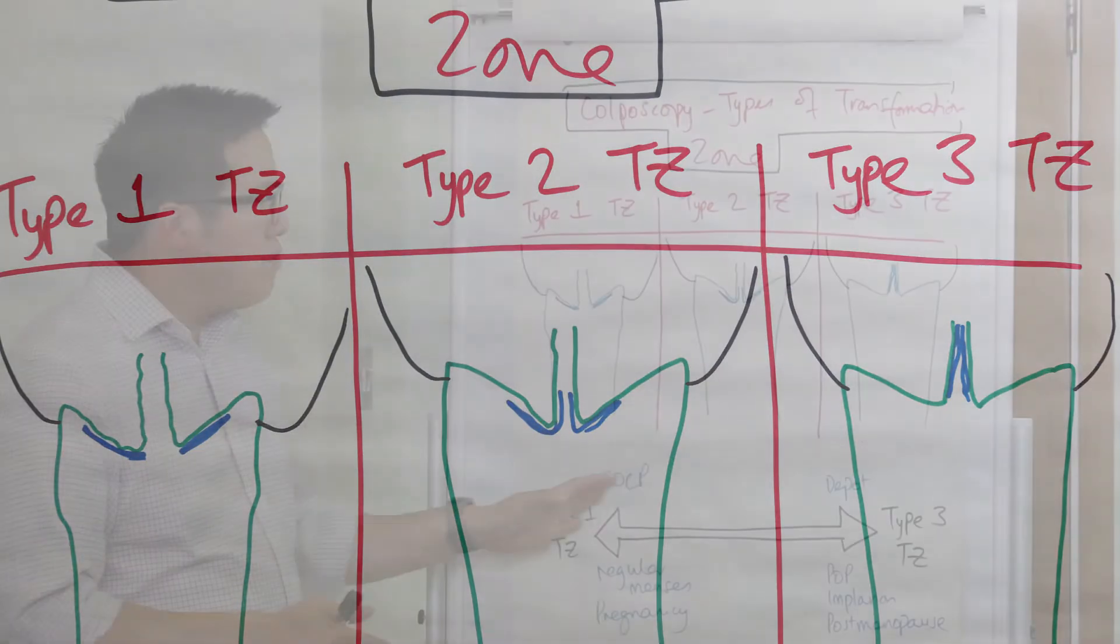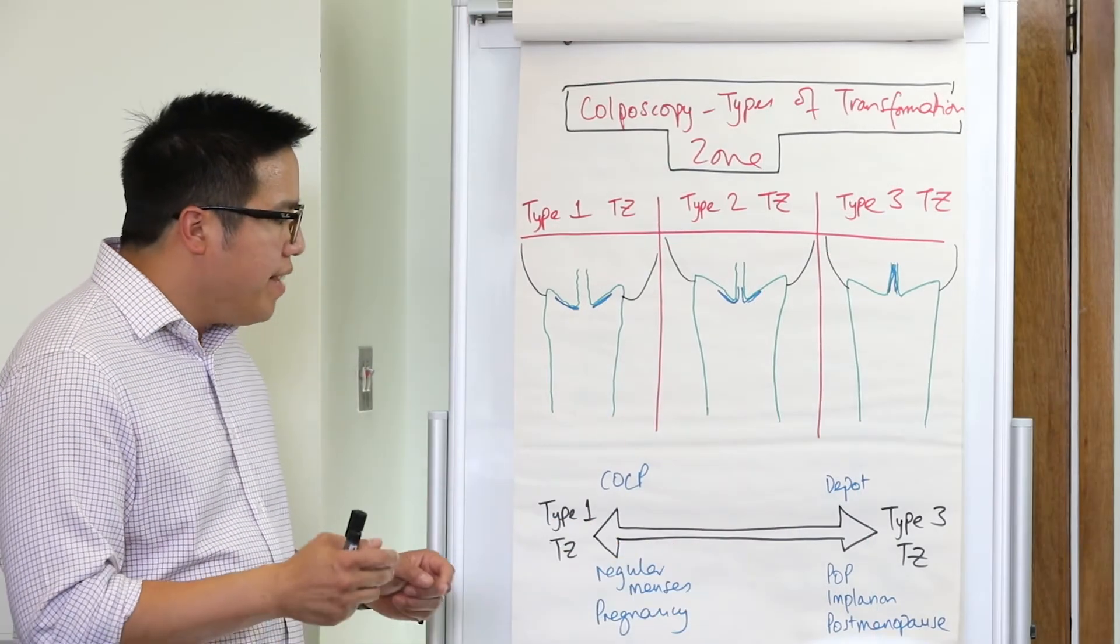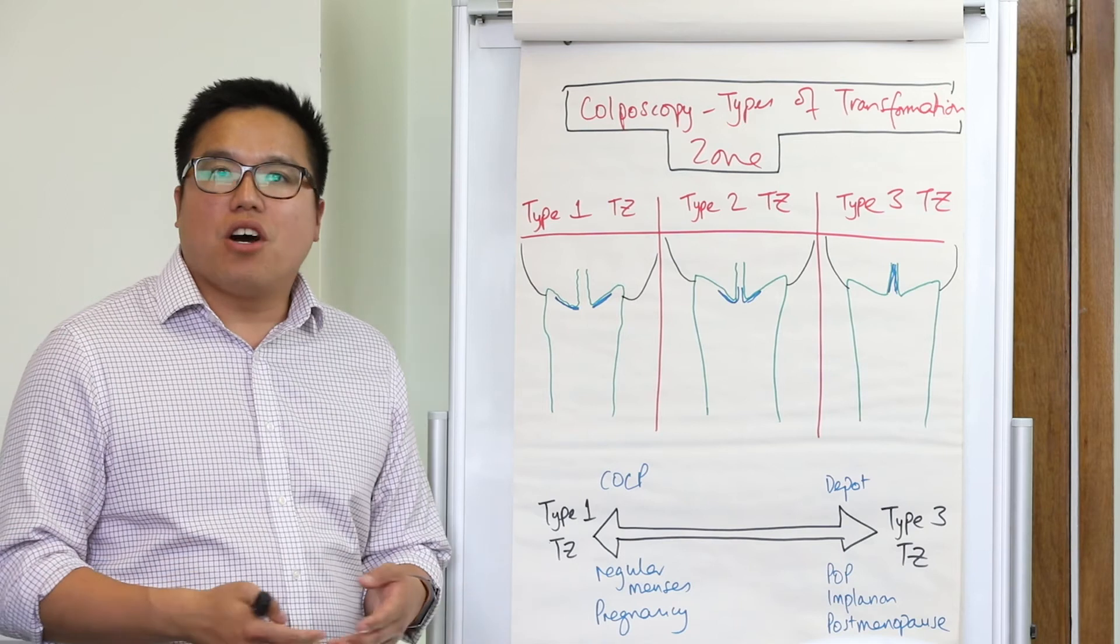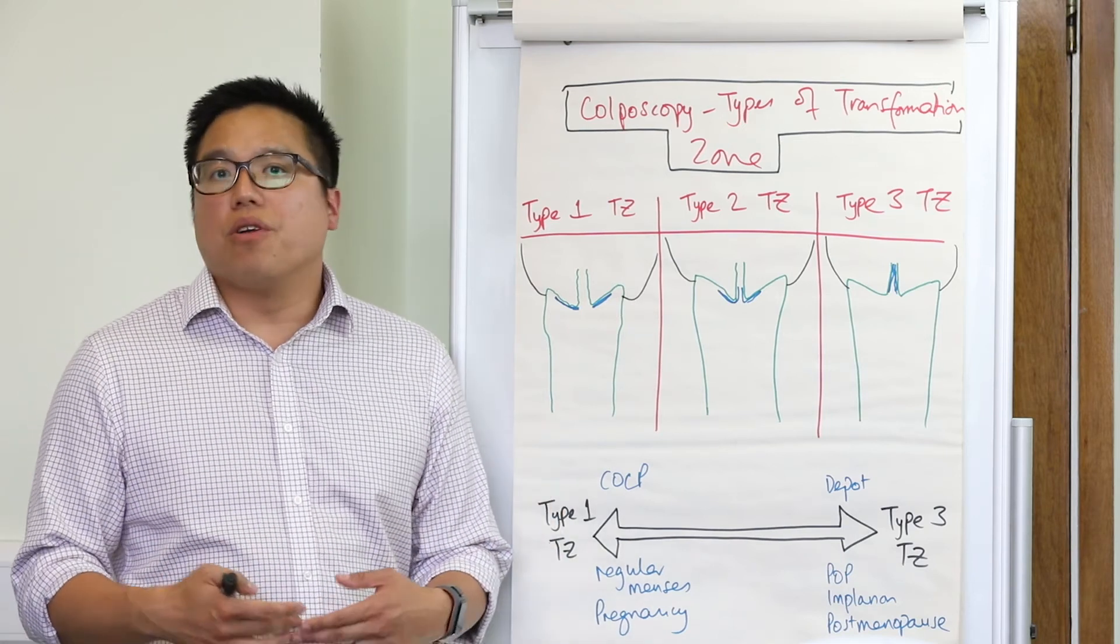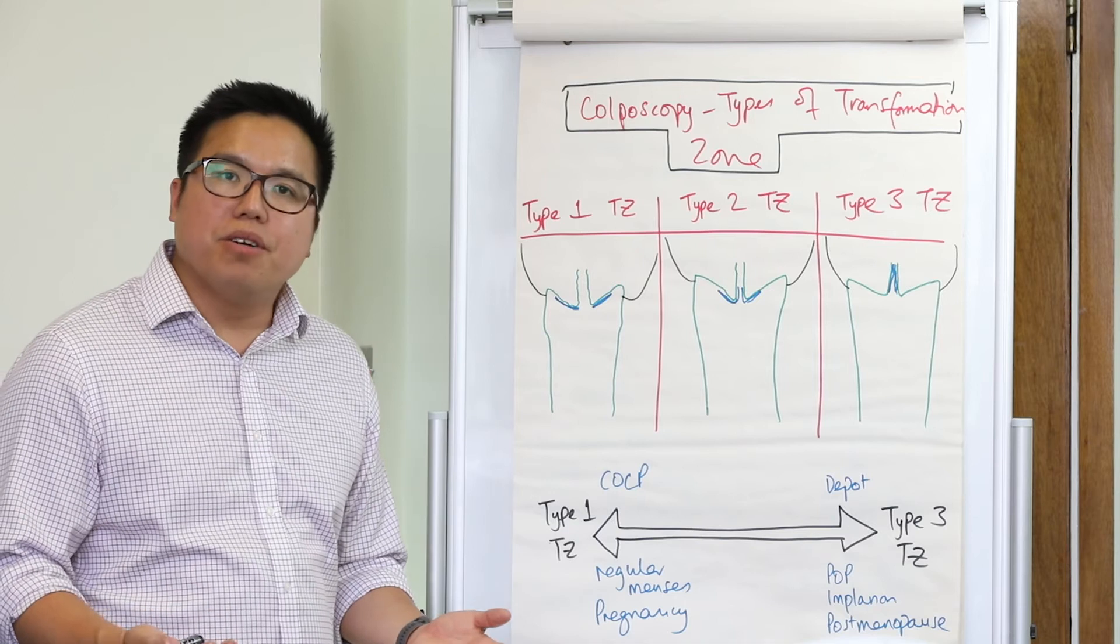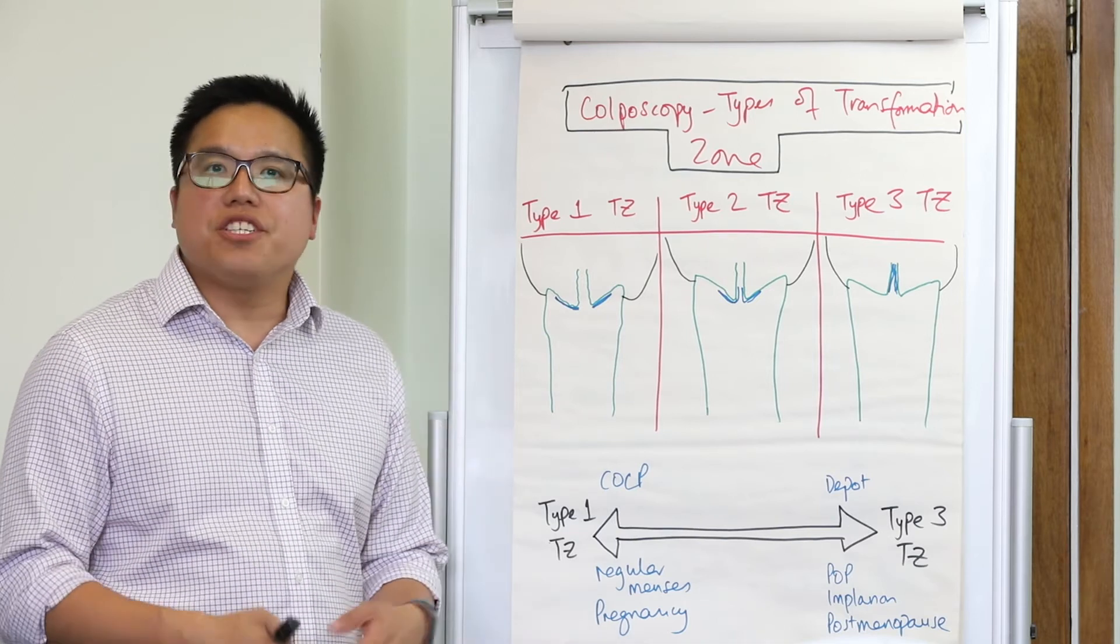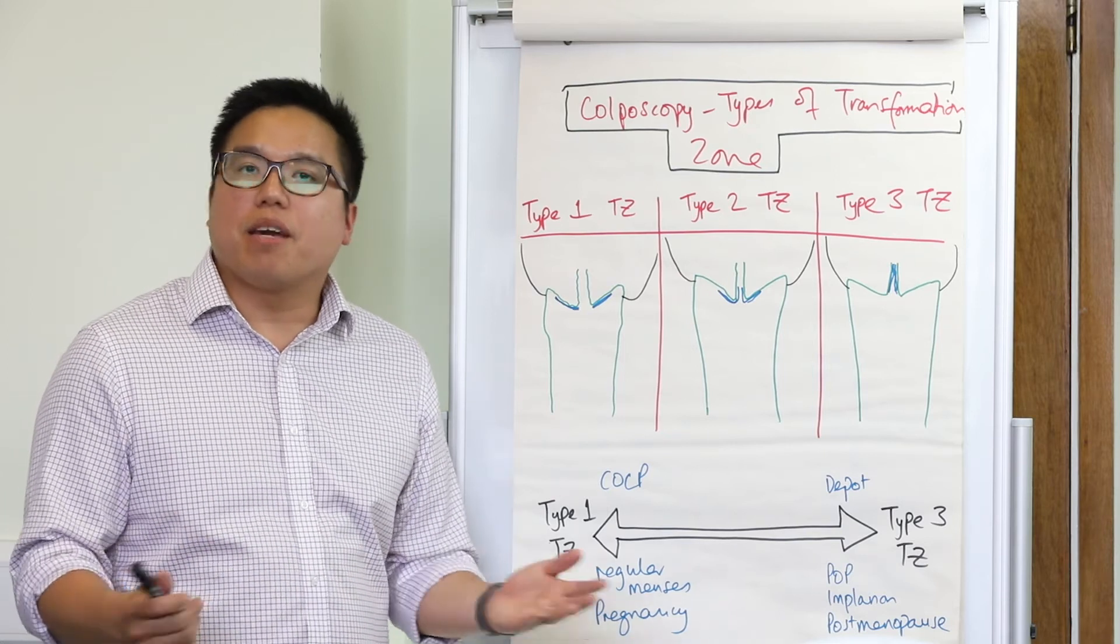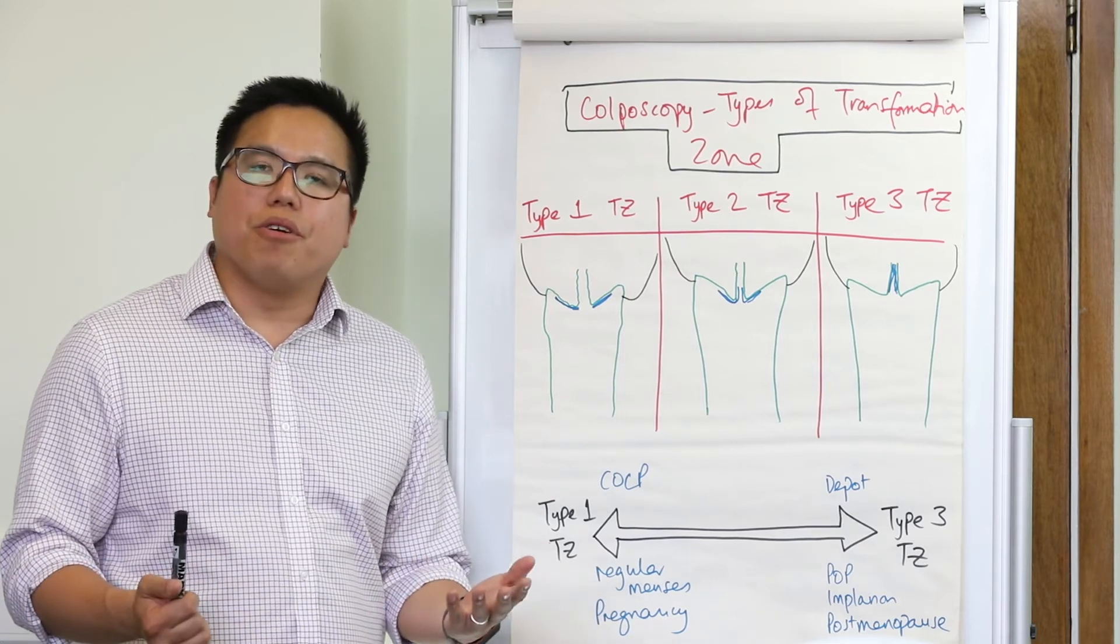Now taking to this panel down at the bottom, things that are going to promote a type 1 transformation zone are when a woman has a high estrogen state. So like when they're taking a combined oral contraceptive pill, or if they're pregnant, or if they're just having regular periods without any hormonal manipulation. Just think about that woman that you see in triage with an ectropion.